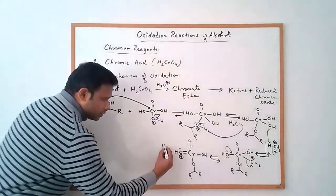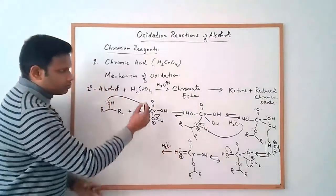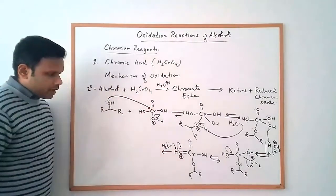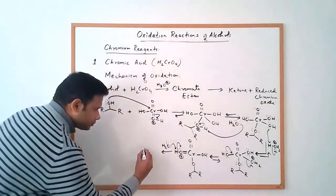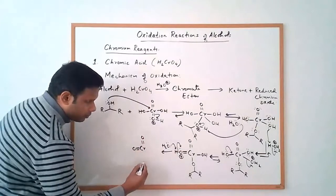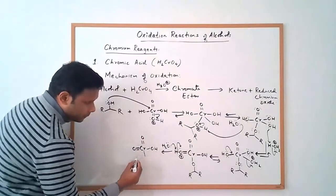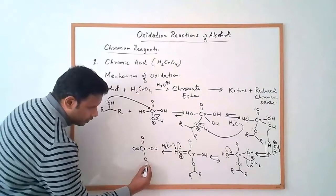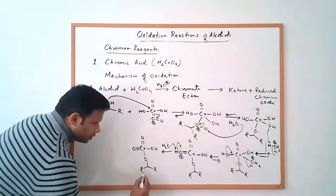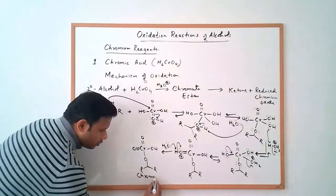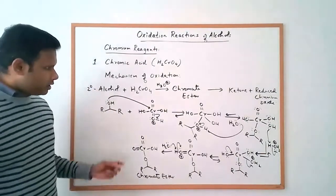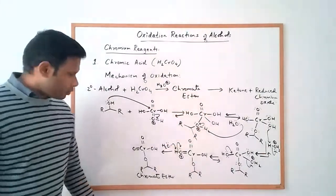Once we reach the chromate ester, we can use a water molecule — since we are under aqueous conditions — to deprotonate, and the electrons go back to the oxygen, giving chromium with a C=O and an O-H. This species is the chromate ester. That's just the first step: formation of the chromate ester.